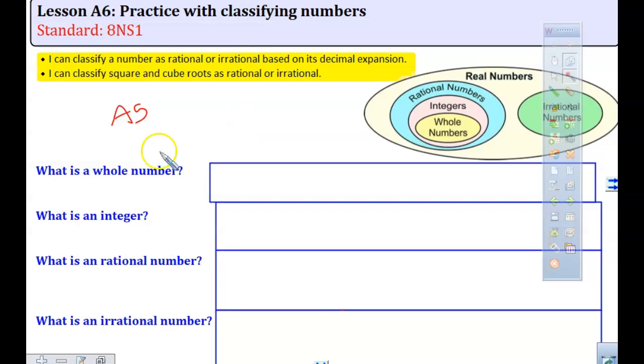Today we are looking at lesson A6. A6 is practice classifying numbers. Your two standards that you are looking at is I can classify numbers as rational or irrational based on its decimal expansion and I can classify square and cube roots as rational or irrational.